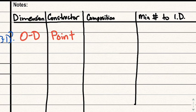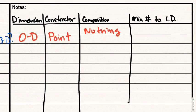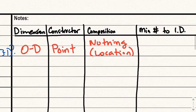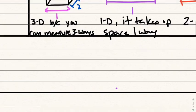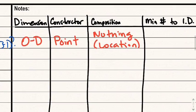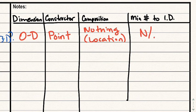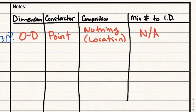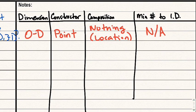The composition of a point is really nothing — at least we perceive it to be nothing. I'd really like to say it's just location. But in our world there's nothing to measure, so 0D really means no dimension, which translates to taking up no space. So: 0D, point, location. For minimum number to identify — that's just N/A. You need one to identify a point, but once you identify it you actually have the point. That's our kind of building block — where we start.